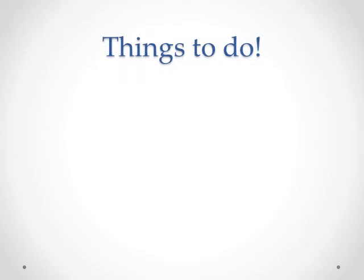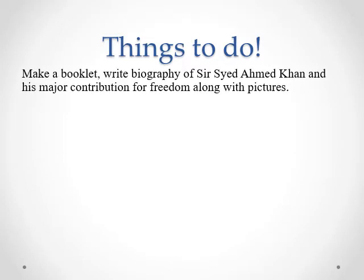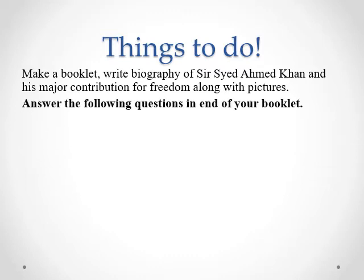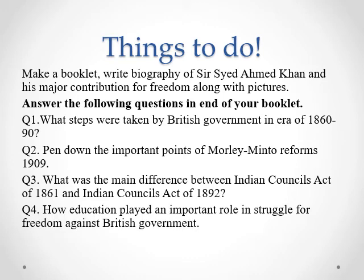At the end of the chapter, I hope you have understood each and every concept. Now what you have to do is make a booklet and write a biography of Sir Syed Ahmed Khan and his major contributions for freedom, along with pictures. Also answer the following questions: What steps were taken by the British government in the era of 1860 to 1890? Write down the important points of the Morley-Minto Reform of 1909. What was the main difference between the Indian Council Act of 1861 and the Indian Council Act of 1892? And how did education play an important role in the struggle for freedom against the British government? Good luck!